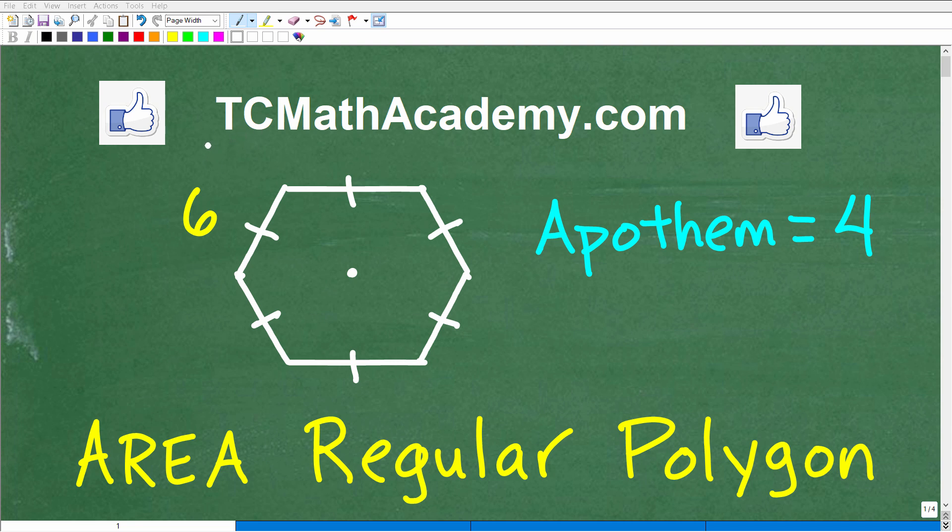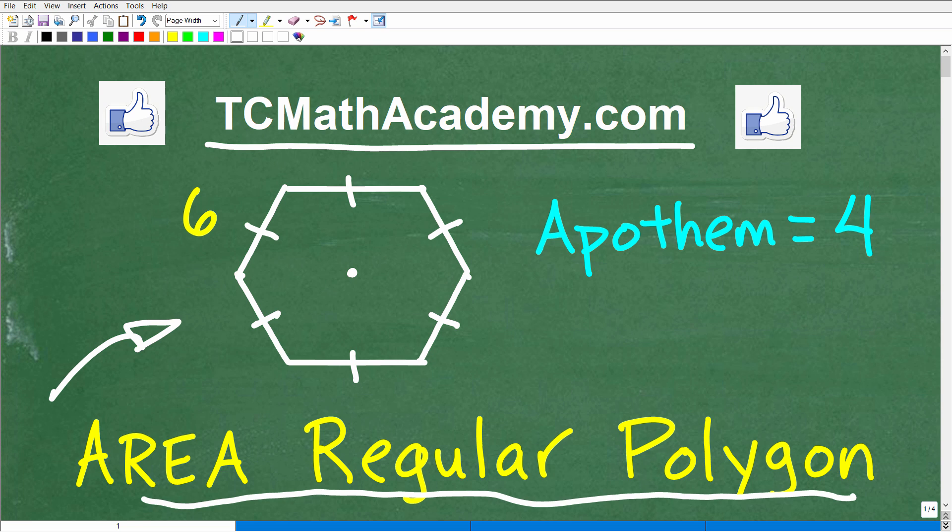Hello, this is John from TC Math Academy, and in this particular video we're going to find the area of a regular polygon. So what we're looking at here is a regular polygon, and we're being told that for this particular polygon, the apothem is 4.